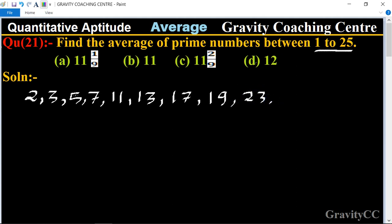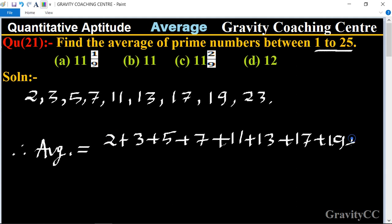So now we find their average. So average equals 2+3+5+7+11+13+17+19+23 upon 9.